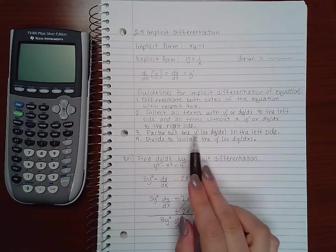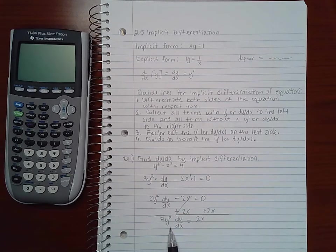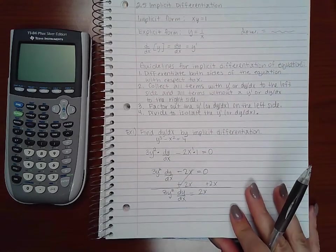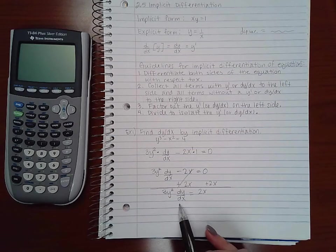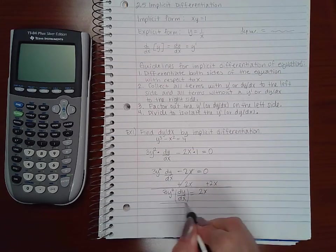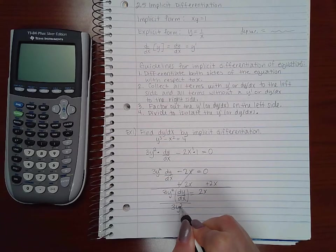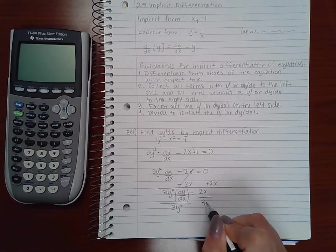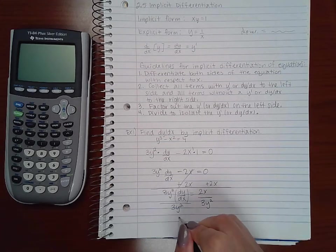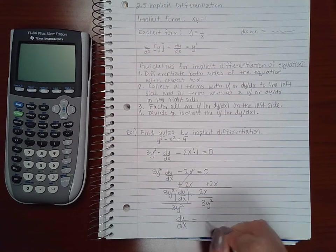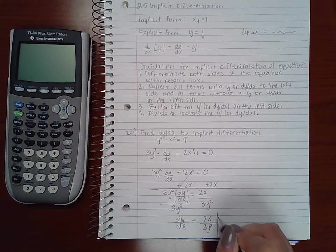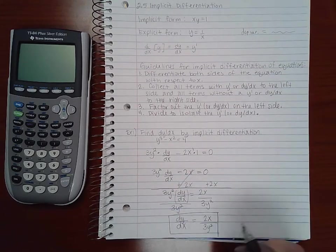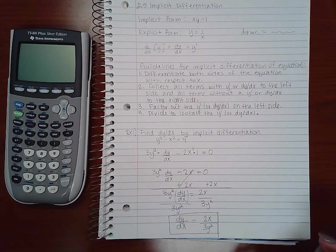It says to factor out the dy/dx, but I only have one term with dy/dx, so I don't necessarily need to do the factoring step. But I can divide to isolate the dy/dx. If I want this by itself, I'm going to divide by 3y squared. I end up with dy/dx equal to 2x over 3y squared, and this is how you differentiate implicitly.